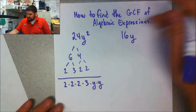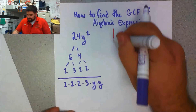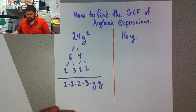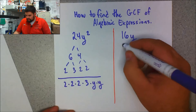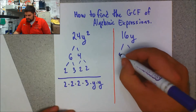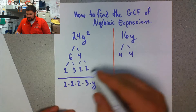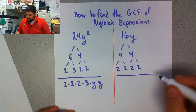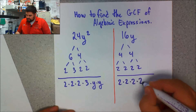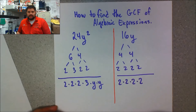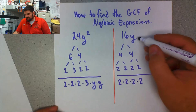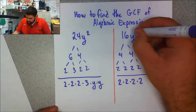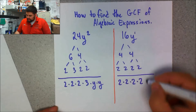Now I need to find the prime factorization of 16y. I split 16 into 4 times 4, and 4 splits into 2 times 2, so the prime factorization is 2 × 2 × 2 × 2. Then I bring down the factorization of y. I notice there is no exponent, so there's only one y — there's an invisible exponent of 1 right up there — so I just bring that down, and there we go.